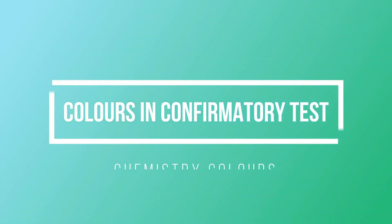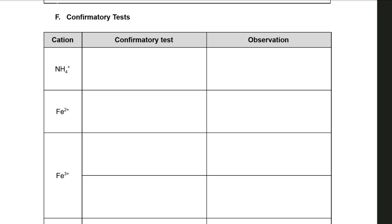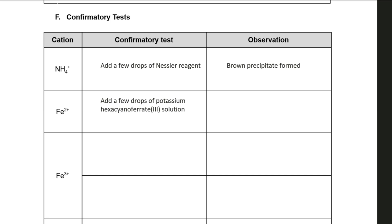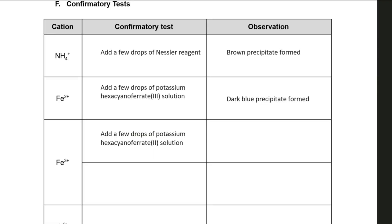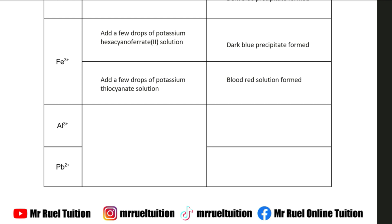After the cation test we also have confirmatory tests. For the NH4+ ion, adding a few drops of Nessler's reagent gives a brown precipitate. For Fe2+, add potassium hexacyanoferrate(III) — a dark blue precipitate forms. For Fe3+, add potassium hexacyanoferrate(II) — again a dark blue precipitate. Alternatively for Fe3+, potassium thiocyanate solution gives a blood red solution rather than a precipitate. For Pb2+, adding potassium iodide solution gives a yellow precipitate.